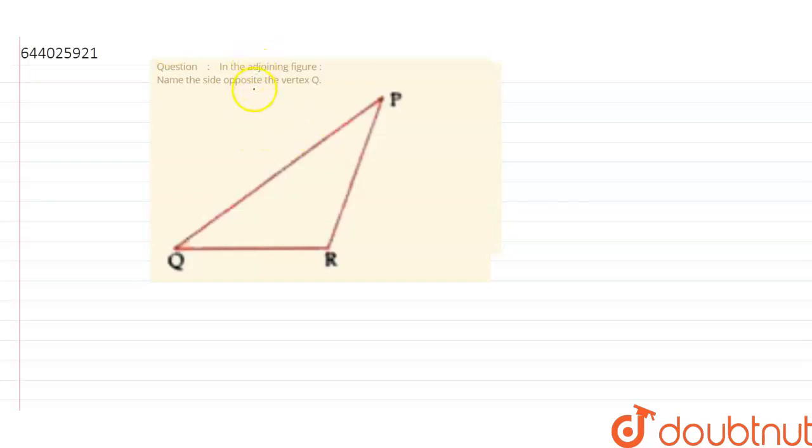And the question is, in the adjoining figure, name the side opposite to the vertex Q. So we are given a figure, let me draw it.